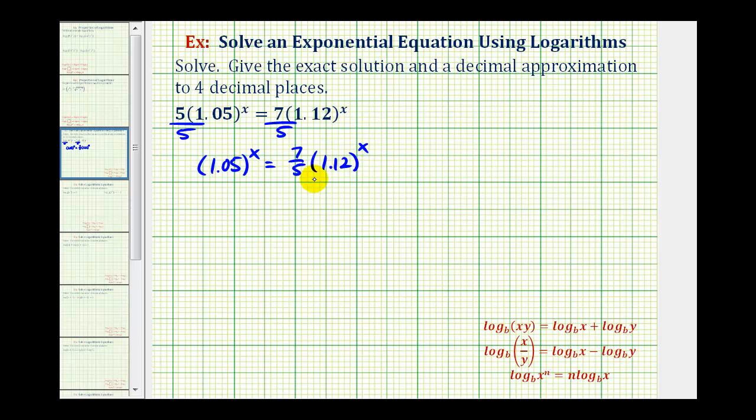Now we'll divide both sides by 1.12 to the power of x. Notice on the right side, this simplifies to one. On the left side, notice how both of these bases are being raised to the power of x, which means we can write this as a fraction raised to the power of x. This would be 1.05 divided by 1.12 raised to the power of x equals seven-fifths.